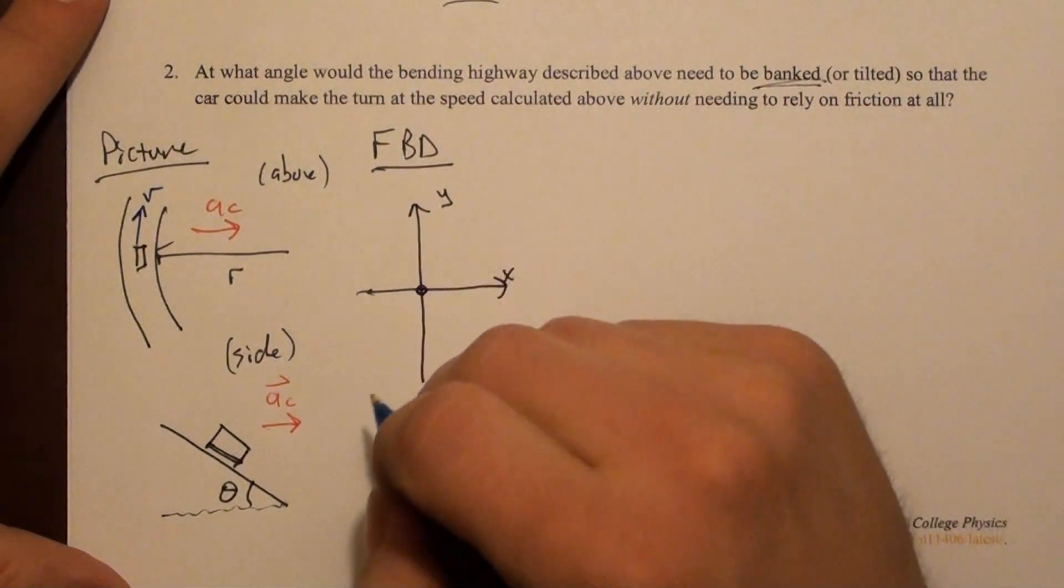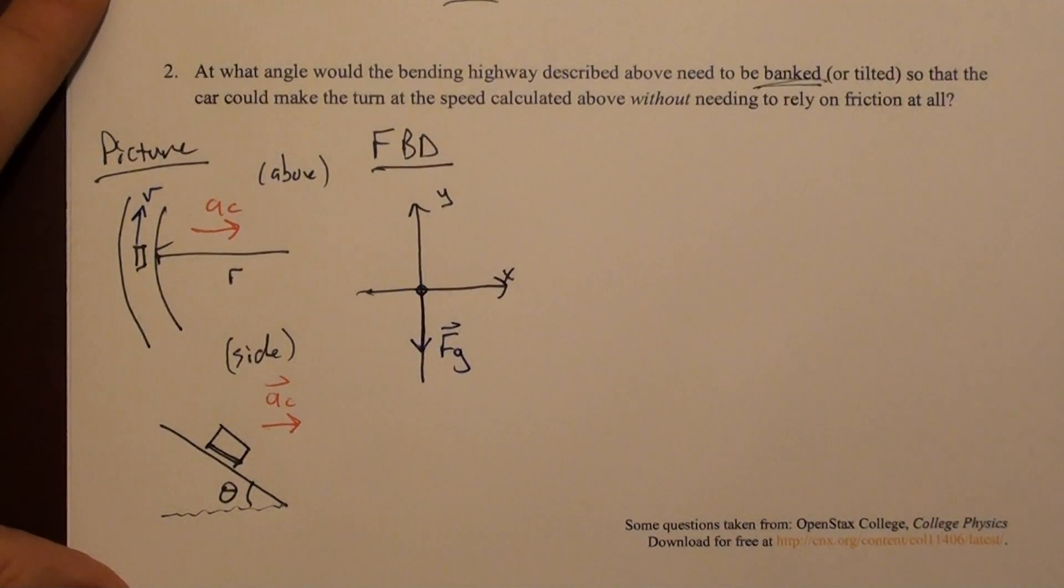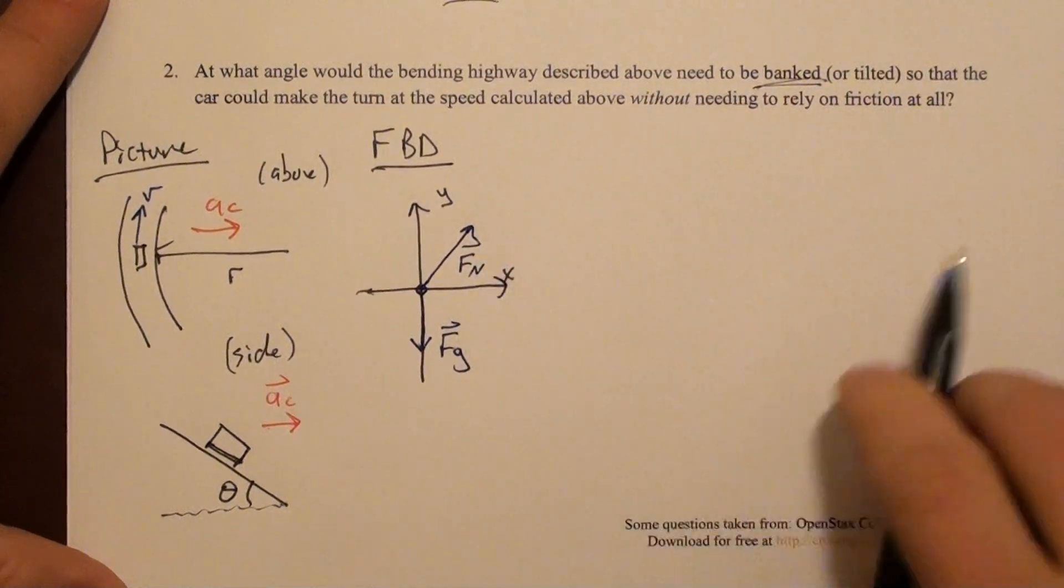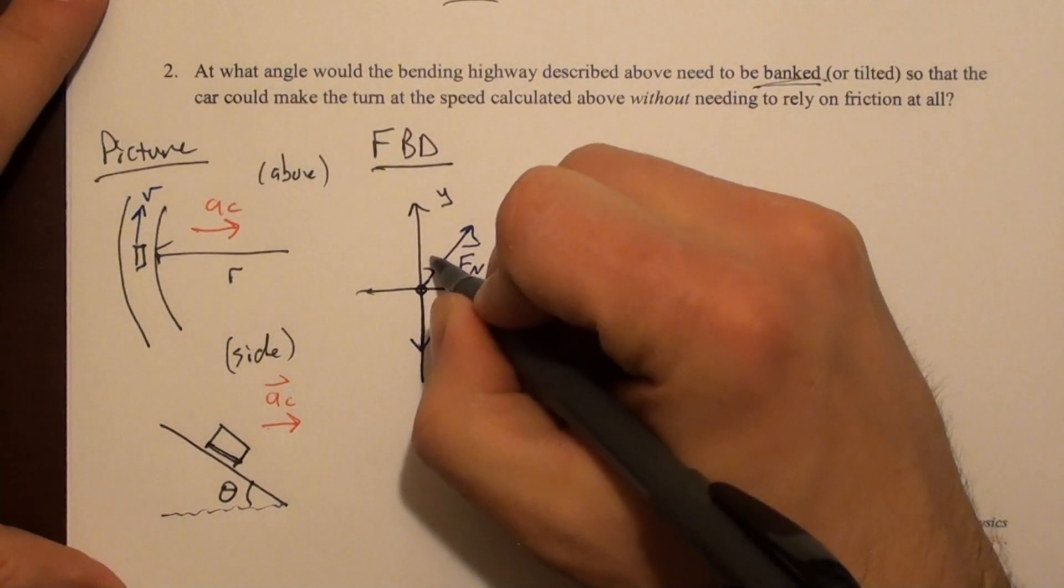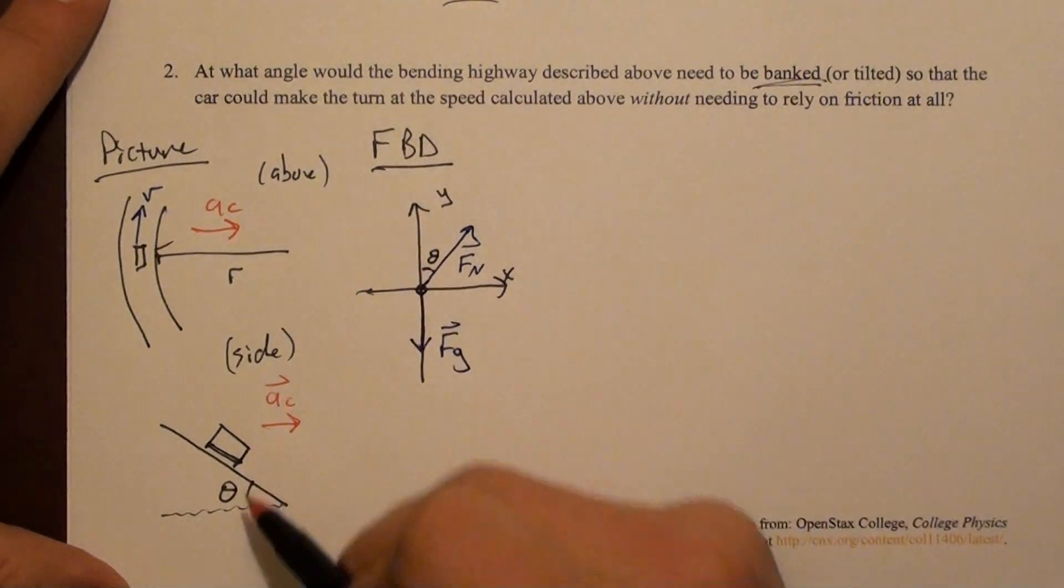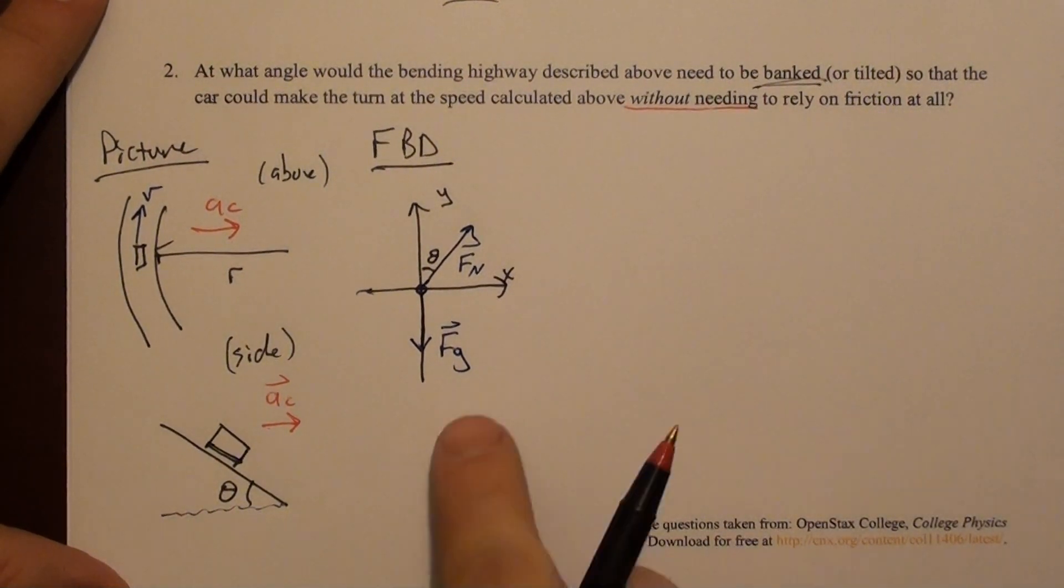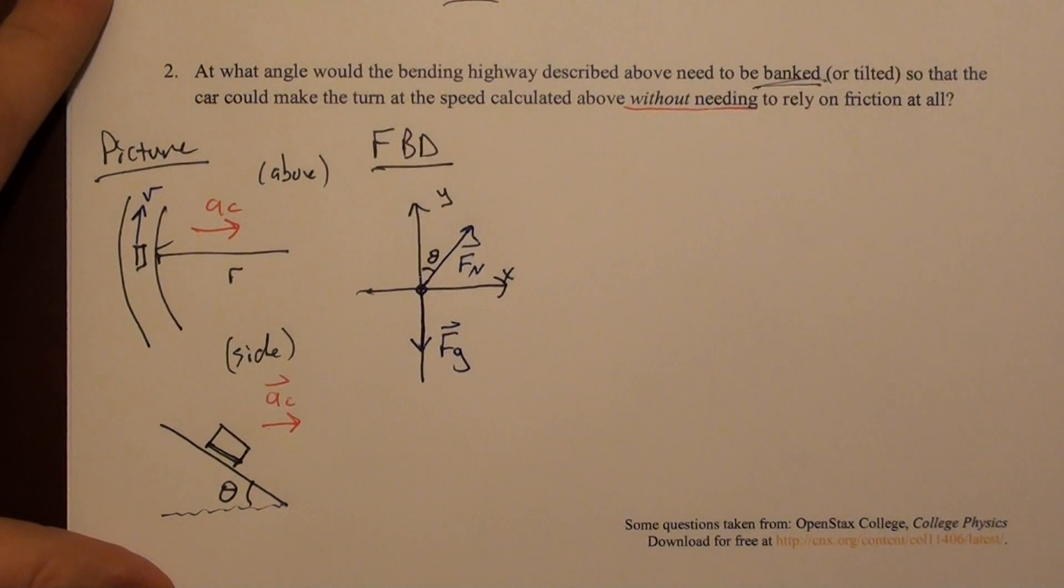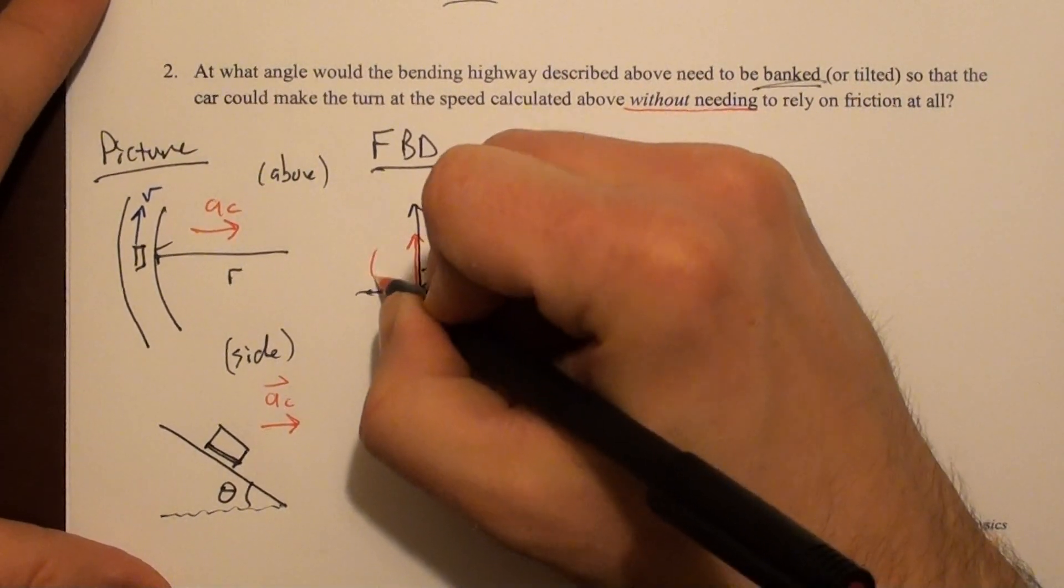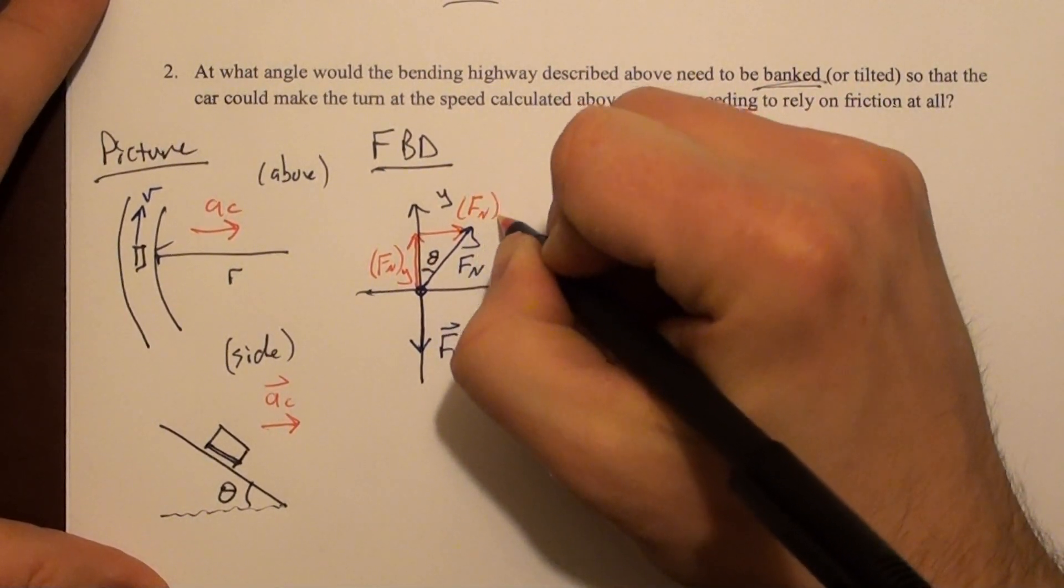We should put some forces on here. There's still gravitational force, and it still points straight down. But now the normal force is tilted. The normal force points this direction, where this angle here is θ. Before I go too much further, I'm going to break the normal force into x and y components, or at least I'm going to draw them on the diagram, because I know that's going to be useful. So I have the y direction force and the x direction normal force.